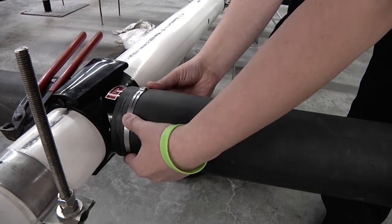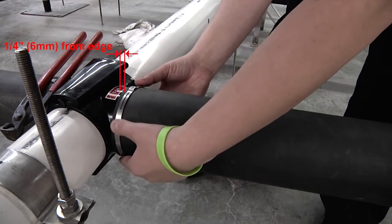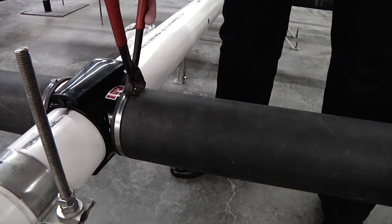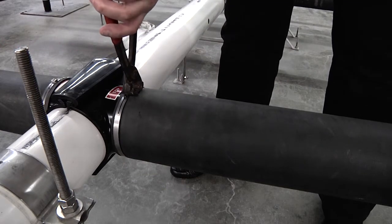For EPDM rubber membranes, the ear should be on the top of the membrane, and for polyurethane membranes, the ear should be placed at 45 degrees from the top of the unit.